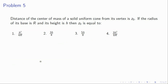Problem 5: the distance of the center of mass of a solid uniform cone from the vertex is z0. The radius of its base is r and height is h. The center of mass of a solid cone is h/4 from the base, so from the apex it will be 3h/4. Option 2 is right.